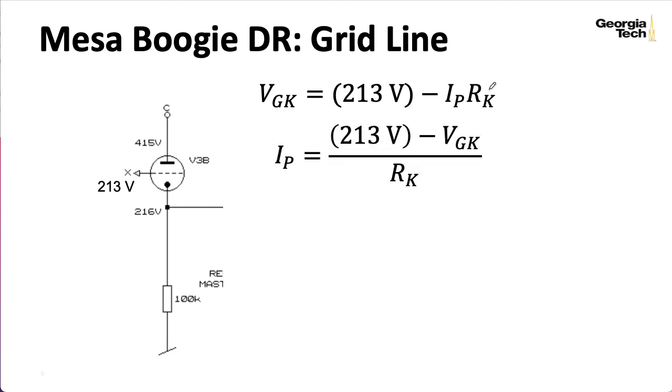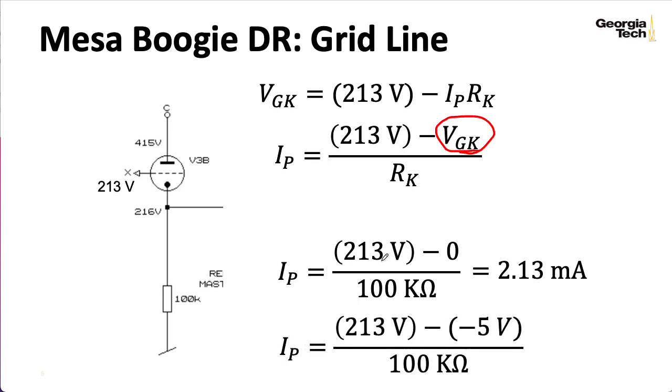So, if I solve this equation for IP, I can try various values of VGK and see what kind of IPs I get in order to plot a grid line. At one extreme, I could say, let's say that the grid-to-cathode voltage is actually zero. If I plug that in, I get 2.13 milliamps. And what if I were to try minus 5 volts? In that case, I wind up with 2.18 milliamps.